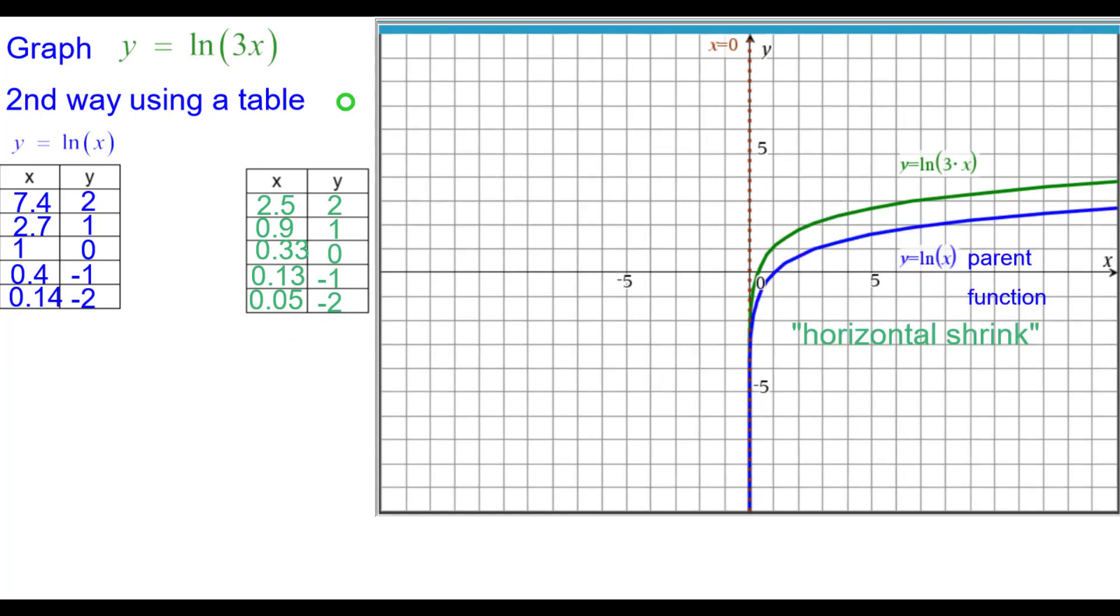Compare that to the parent function and the green function is a horizontal shrink of the parent function.